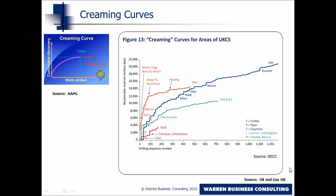What you're looking at here are the creaming curves for four different basins in the UK North Sea: West of Shetland, where approximately 200 exploration wells have been drilled; Southern North Sea, approximately 800 wells; Central North Sea, with over a thousand wells drilled; and Northern North Sea, with some 500 wells drilled.